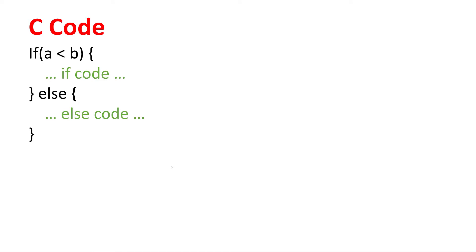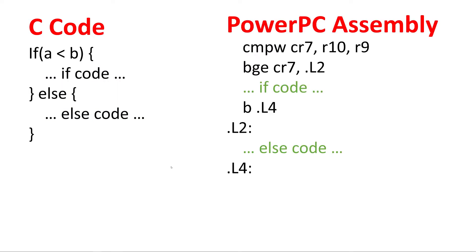Let's take a look at a simple if-else block. With a normal CPU that's relatively easy to implement in assembler. Here's the code for PowerPC - basically you've got a compare instruction, then a branch if greater than or equal. So what that does is: if b is greater than or equal to a, then jump to the else code; otherwise it falls through to the if code, and then this b.l4 is a branch that bypasses the else code. Quite easy to follow and understand.